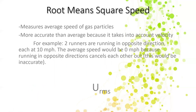Going a little bit more into speed, we're going to talk about root mean square speed. What is it? It's kind of like taking the average of the gas particles, but it's a little bit more accurate than the average — I think one of the reasons is because it takes into account velocity. For example, if we had two runners going in opposite directions each at 10 miles per hour, taking the average would give you zero miles per hour because the positives and negatives cancel out. Zero miles per hour is not accurate because it's not taking direction into account. Root mean square speed is more accurate than the simple average for this reason.